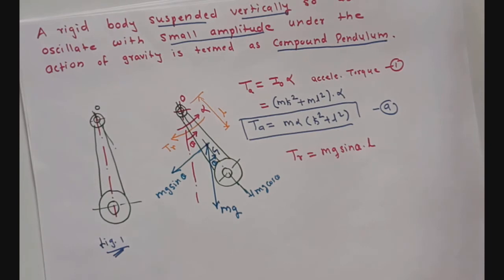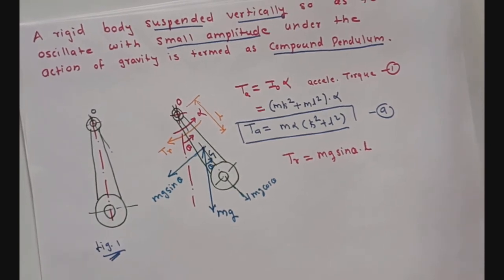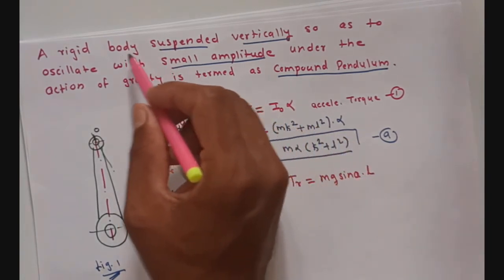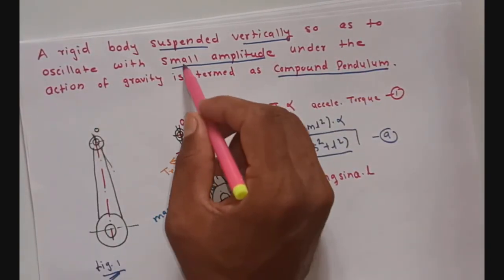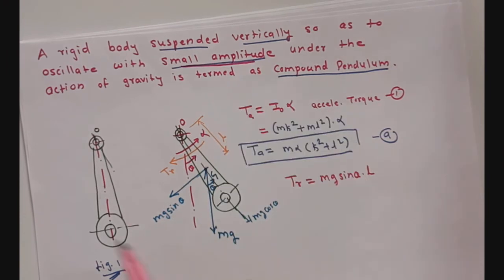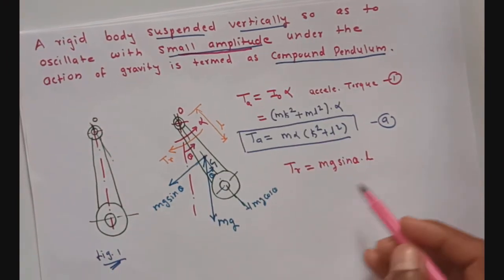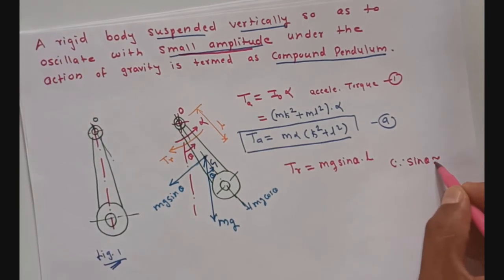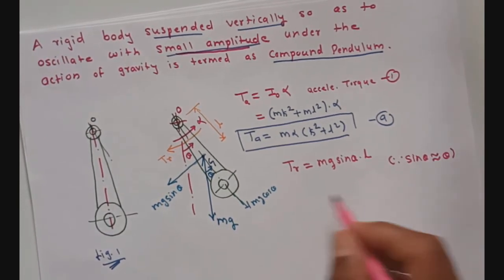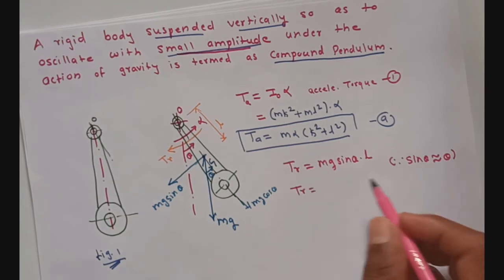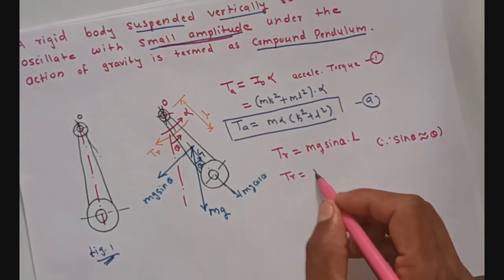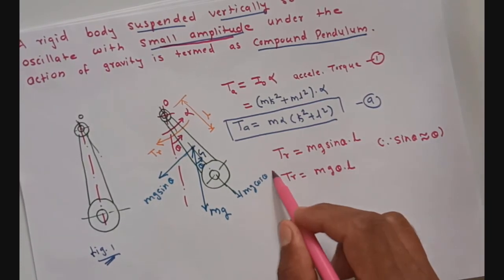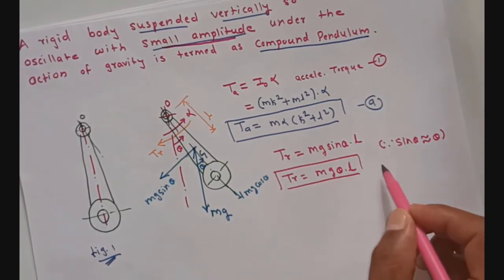Going back to the definition of compound pendulum: we have defined it as a rigid body oscillating with small amplitude, which means theta is very very small. So for small theta, sin(theta) corresponds to theta. Therefore restoring torque becomes Mg·theta·L. We will call this equation B.